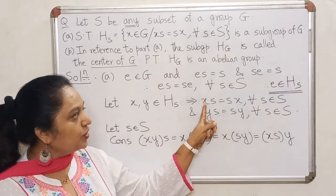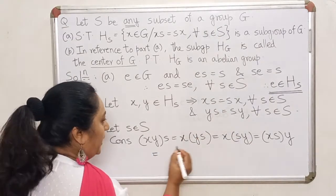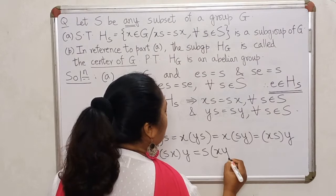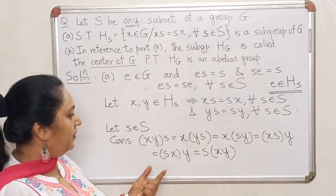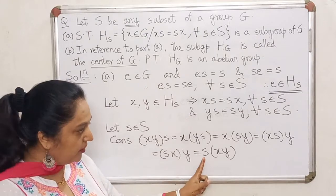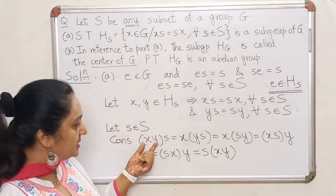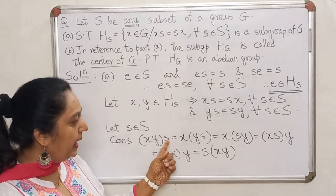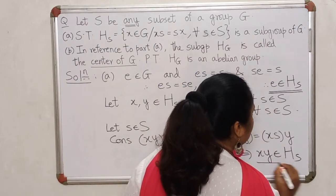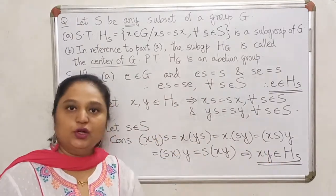Since X commutes with all elements of S, XS equals SX. Substituting, we get SX times Y, and using the associative property one more time, this equals S times (XY). So we have proved that (XY) times S equals S times (XY) for every element S in capital S. This means XY commutes with all elements of S, so XY also lies in the set. The closure property is satisfied.